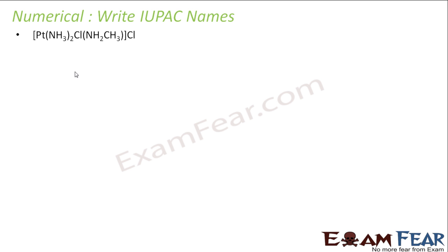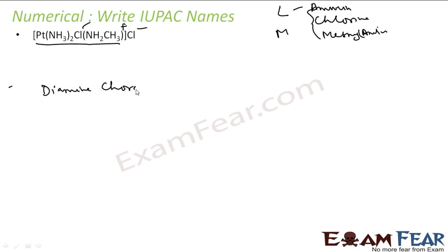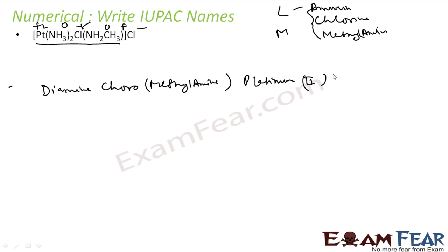Let's take more examples. Pt(NH3)(Cl)(NH2CH3)Cl — this whole thing is a complex with cation and anion. Ligands: we have amine and chlorine, and methylamine. It is already in alphabetical order. Two amines is di-amine, then chlorido, then methylamine in braces, then platinum. Platinum is plus 2 charge. Done with the complex. The anion is chlorine, so I write chlorido.